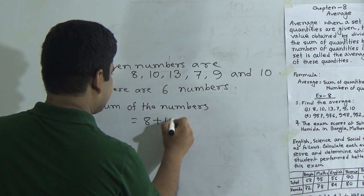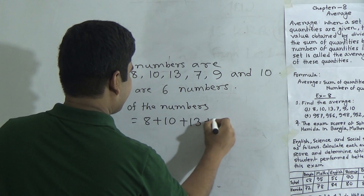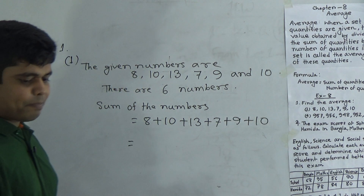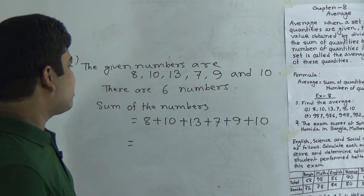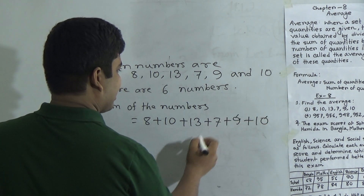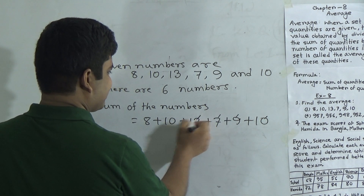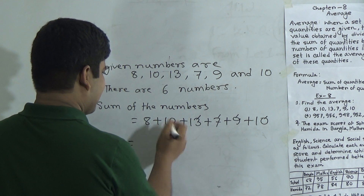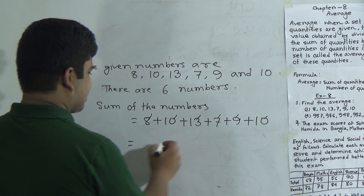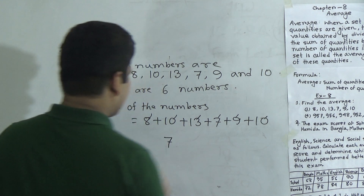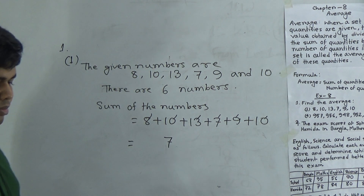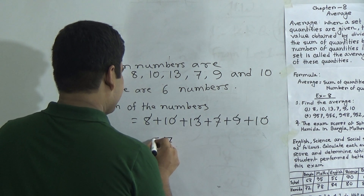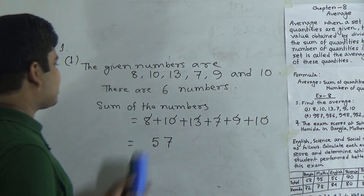Sum of numbers: 8 plus 10 plus 13 plus 7 plus 9 plus 10. Adding the ones digits: 0 plus 9 plus 9 plus 7 equals 16, plus 3 equals 19, plus 0 equals 19, plus 8 equals 27. Write 7 carrying 2. Then tens digits: 1, 2, 3 plus the carry gives 5. So 57 is the sum of the quantities.